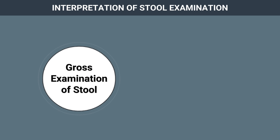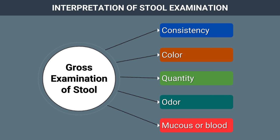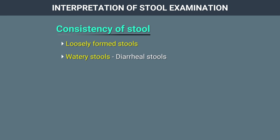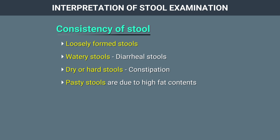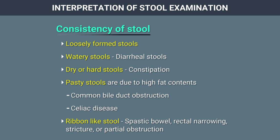Gross examination of stool includes consistency, colour, quantity, odour, and presence of mucus or blood. Consistency is described as loosely formed stools, watery stools as seen in diarrheal stools, dry or hard stools as seen in constipation, and pasty stools due to high fat content seen in common bile duct obstruction or celiac disease. Ribbon-like stool suggests spastic bowel, rectal narrowing, stricture, or partial obstruction.